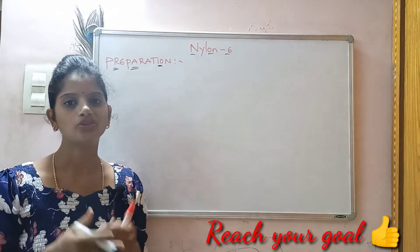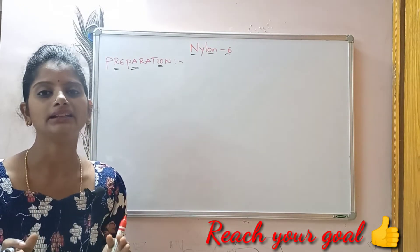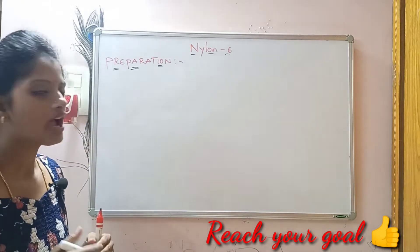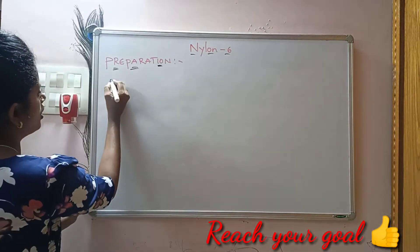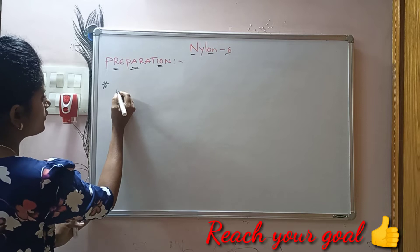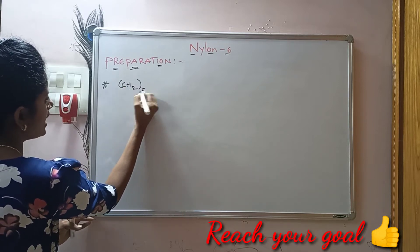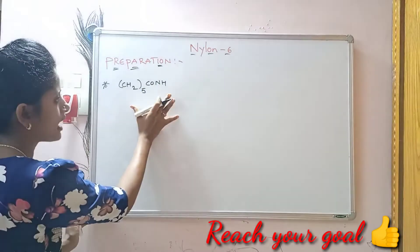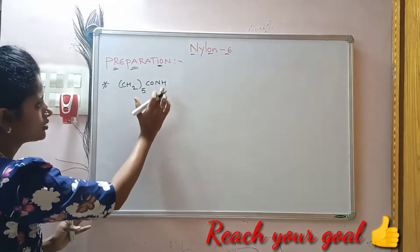Friends, preparation of Nylon 6. Nylon 6 is obtained by heating caprolactam with water at a high temperature. The molecular formula of caprolactam is (CH₂)₅ CO NH.